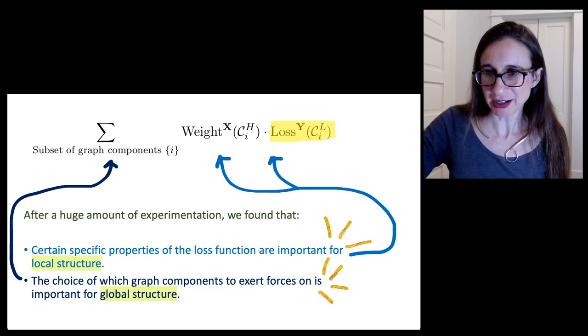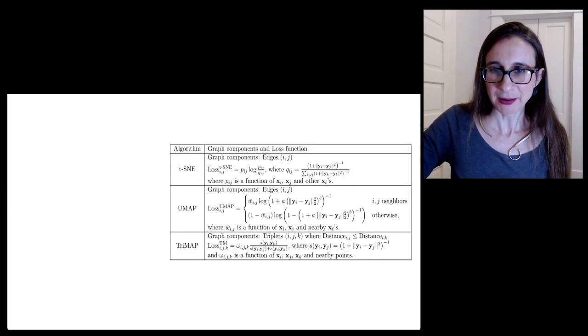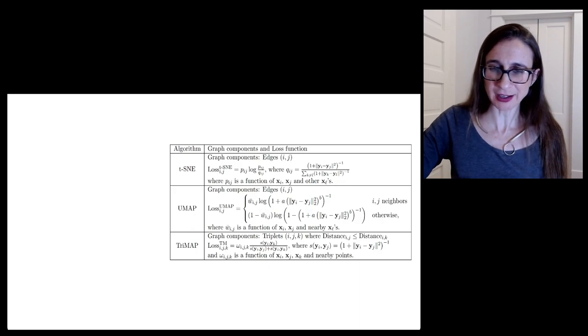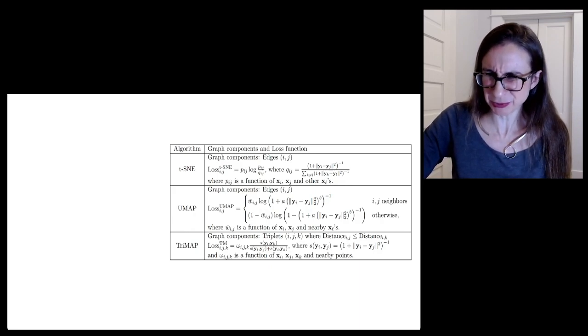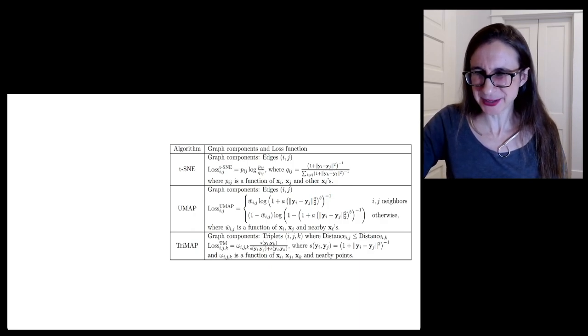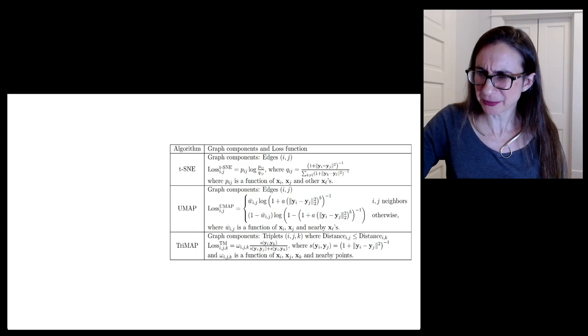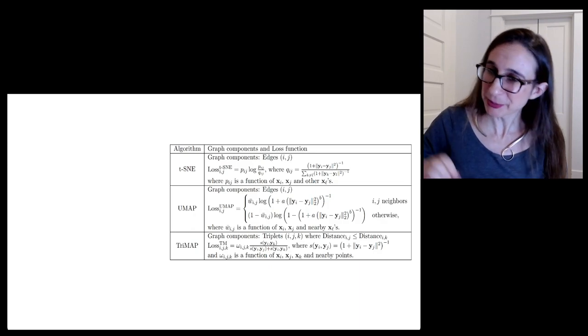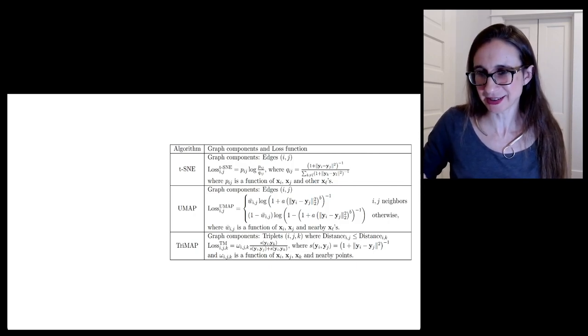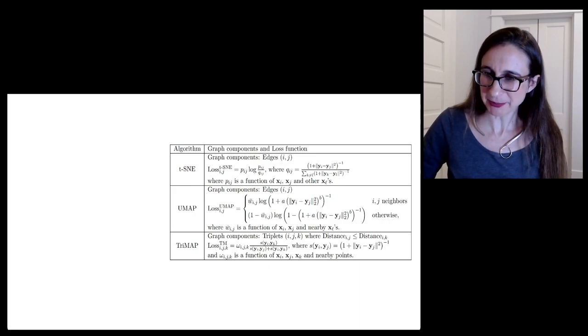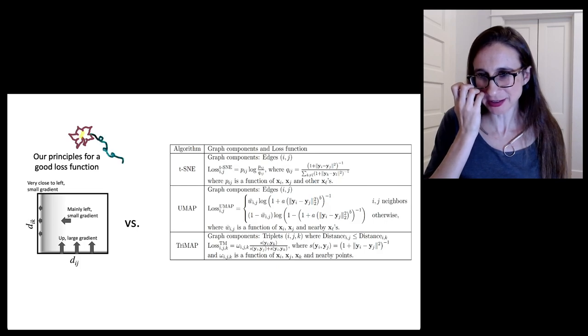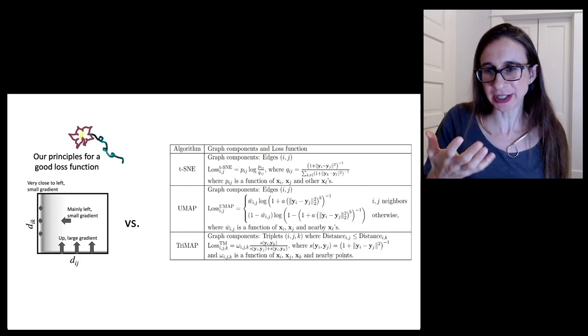I just want to talk about the loss function for a very short time. So we looked at the loss functions for t-SNE and UMAP and TriMap. To be honest, it's just very difficult to read. It's just really hard to understand. All the functions had different forms and they really didn't seem to be comparable to each other. We had a very hard time understanding them until we plotted them. Then we realized that there was a way to plot them that really allowed us to understand what were the properties of them that made them work.